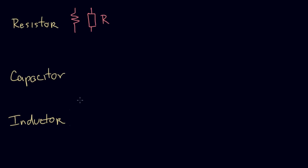For the capacitor, the symbol reflects how it's built: from two conductors or metal objects placed close together. Most capacitors sort of look like that when they're actually built, and the symbol for a capacitor is C. For the inductor, an inductor is actually built from a coil of wire, and so when we draw an inductor symbol, we draw a little coil of wire like that.